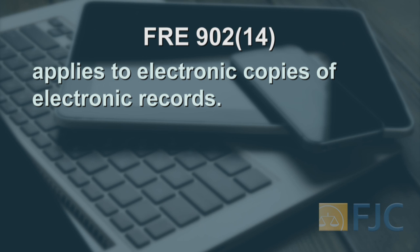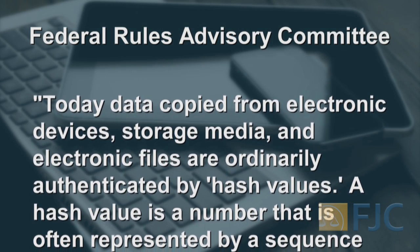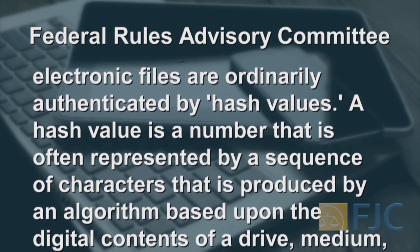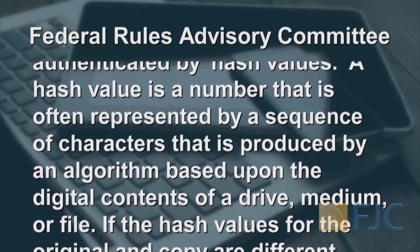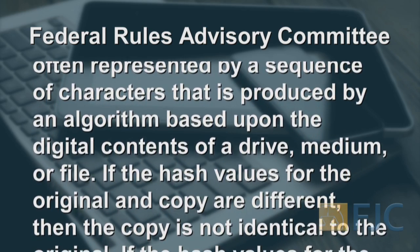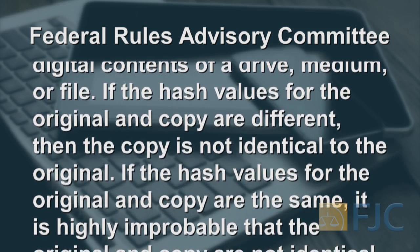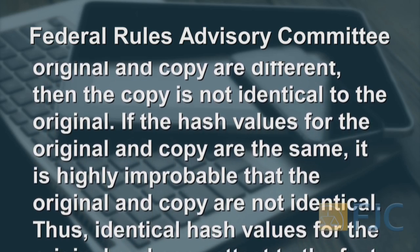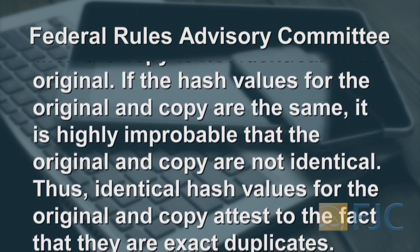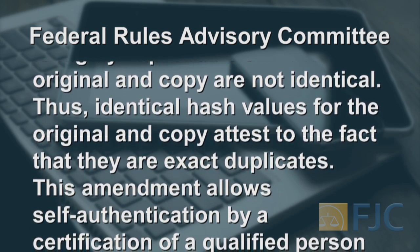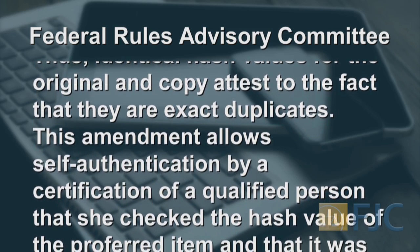Rule 902 Section 14 applies to electronic copies of electronic records. The advisory committee note explains how authentication is often established by what are called hash values. Today, data copied from electronic devices, storage media, and electronic files are ordinarily authenticated by hash values. A hash value is a number, often represented by a sequence of characters, that is produced by an algorithm based upon the digital contents of a drive, medium, or file. If the hash values for the original and copy are different, then the copy is not identical to the original. If the hash values for the original and copy are the same, it is highly improbable that the original and copy are not identical. Thus, identical hash values for the original and copy attest to the fact that they are exact duplicates.